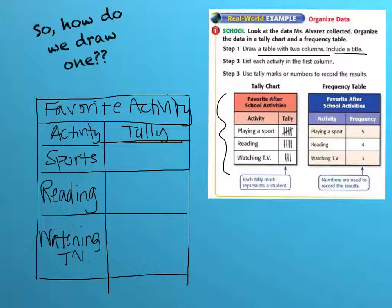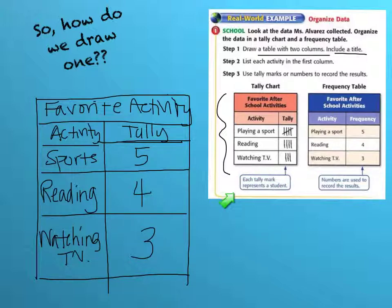Then you can count your tallies. Looking at the data, I'm going to make the frequency chart here. Five people chose playing a sport, four people chose reading, and three chose watching TV. Remember, you have to have the same number of tally marks as students that voted. When you do your own surveys, make sure your tally marks add up to the same number of students you surveyed. You don't have to use a ruler, but make sure your columns and rows line up and you have a title for each section.